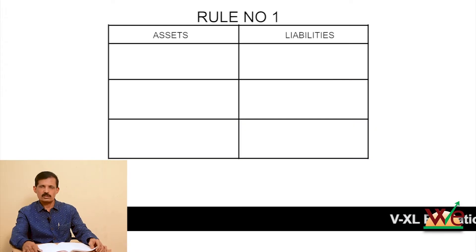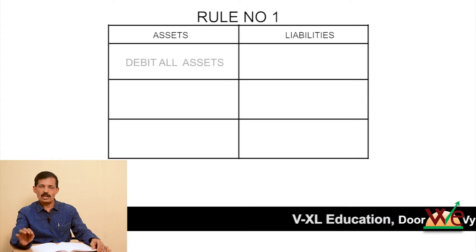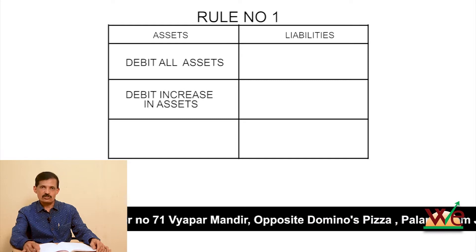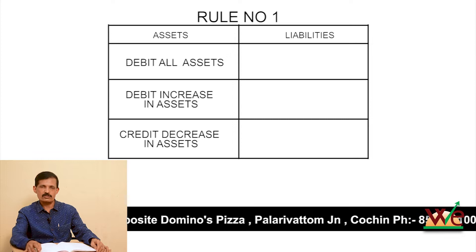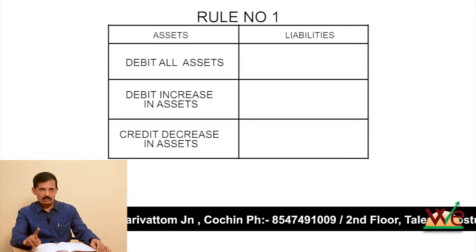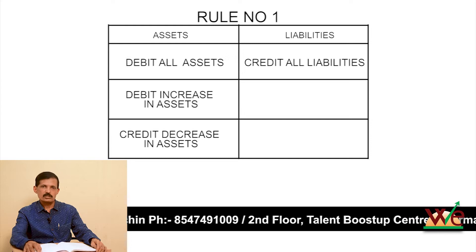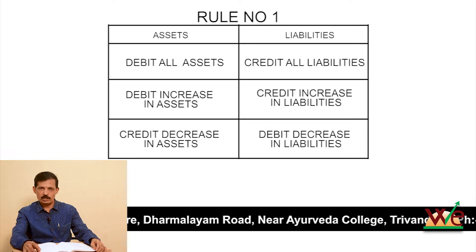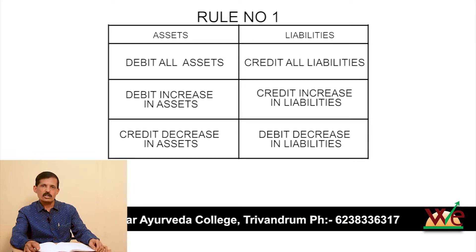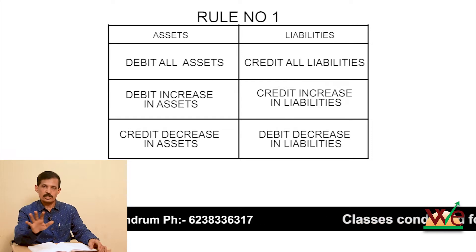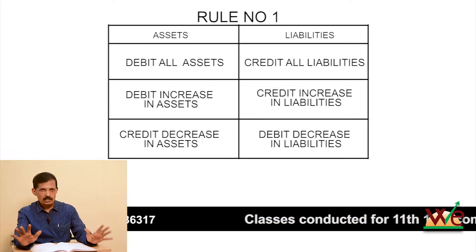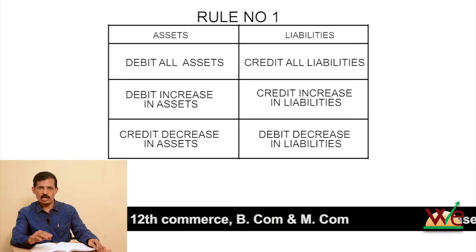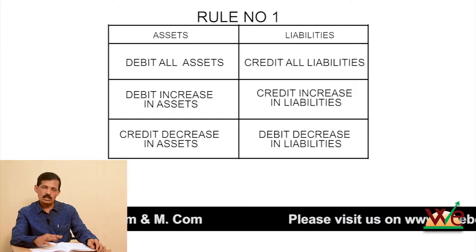Rule number one: Debit all assets — debit all increases in assets, credit decreases in assets. Credit all liabilities — credit all increases in liabilities, debit all decreases in liabilities. So naturally, assets are debited and liabilities are credited.